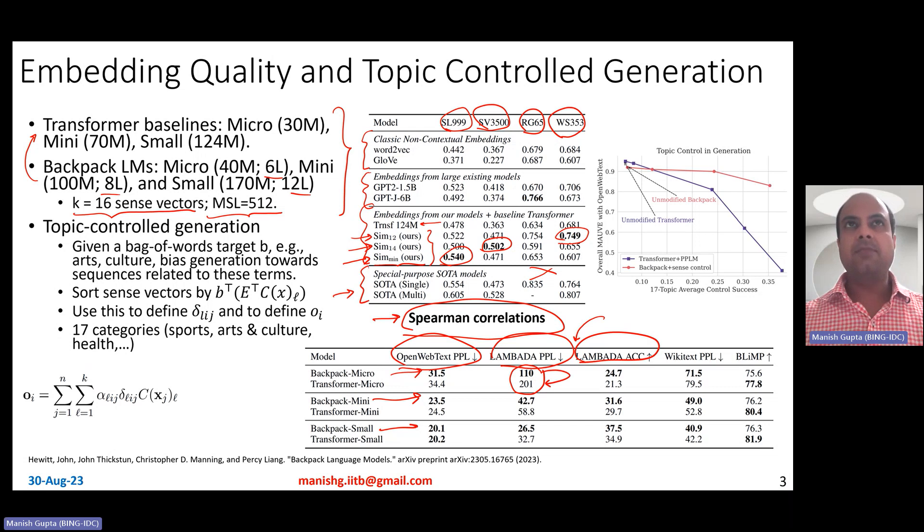Now, what is the goodness? This is great that yes, you have come up with a new sort of transform, a little modified architecture of Transformers, but that is what is great about these models. So there are three interesting applications that they show of backpack LMs. So one is topic control generation.